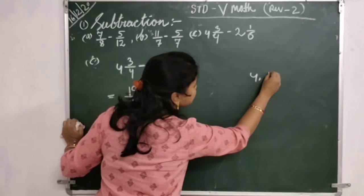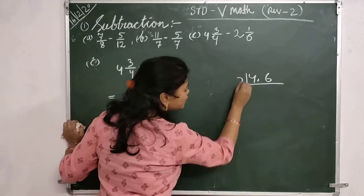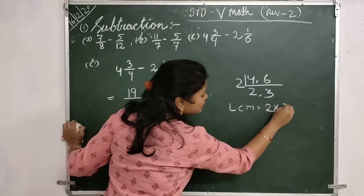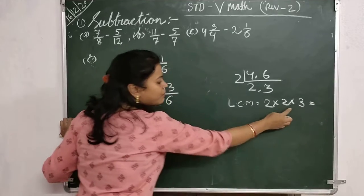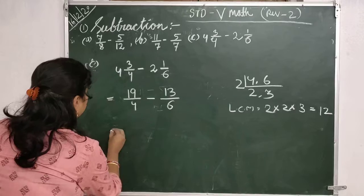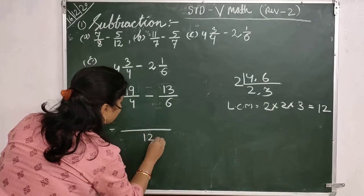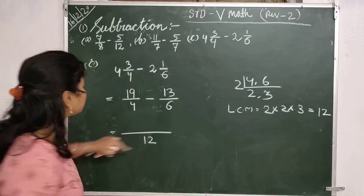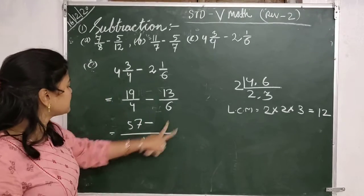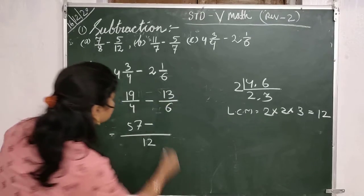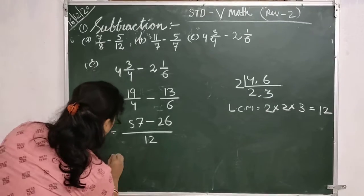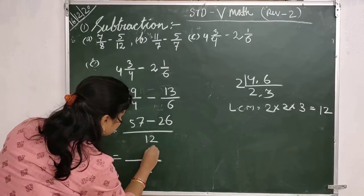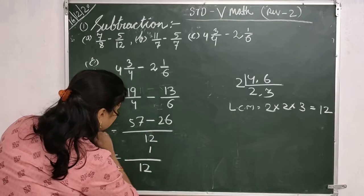Now we have to find the LCM of 4 and 6. I will divide by 2: 2 times 2 is 4, 2 times 3 is 6. The LCM is 2 into 2 into 3, equal to 4 times 3 is 12. So I will write here 12. Then I divide 12 by 4: 4 times 3 is 12, so 19 times 3 is 57. Minus: 6 times 2 is 12, and 2 multiplied by 13 is 26. So we have 57 minus 26: 7 minus 6 is 1, 5 minus 2 gives 3, so 31.